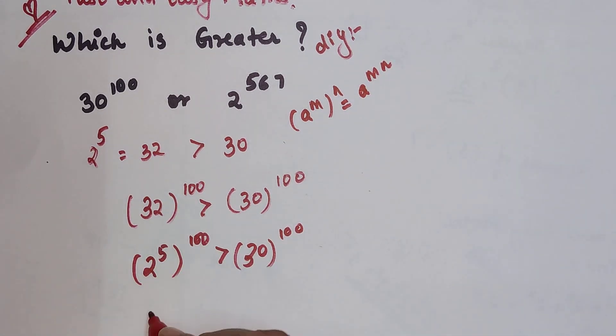So 5 times 100, so we can write this as 2 raised to 500 is greater than 30 raised to 100.